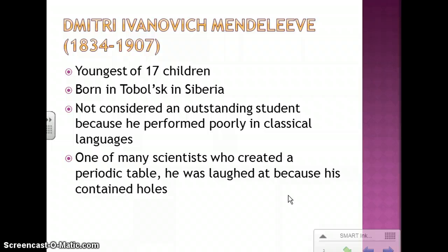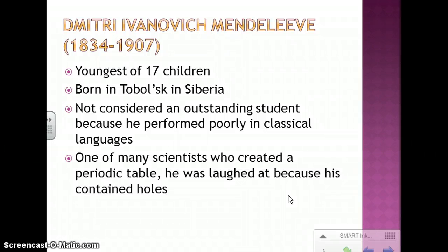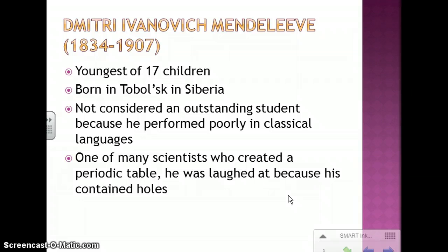There was a man named Dmitri Ivanovich Mendeleev, and he lived from 1834 to 1907. He was the youngest of 17 children, born in Siberia, and he didn't perform very well in classical languages, so he wasn't considered an outstanding student. But he's actually one of the many scientists who ended up creating a periodic table, and he was laughed at because his periodic table had holes in it. Come to find out, he was actually smarter than everyone else — he realized that not all of the elements had been discovered yet, so he left space for them. That's why there were holes in the table.